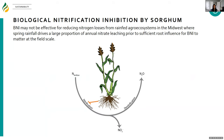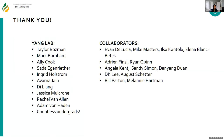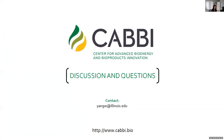While a little bit deflating, we were excited to have a successful modeling-measurement integration study. We found that BNI may not be effective for reducing nitrogen losses from rain-fed agroecosystems in the Midwest, where spring rainfall drives a large proportion of annual nitrate leaching prior to the sorghum growing to the maturity where it's expressing BNI and having sufficient root biomass to make BNI matter at the field scale. Thank you.